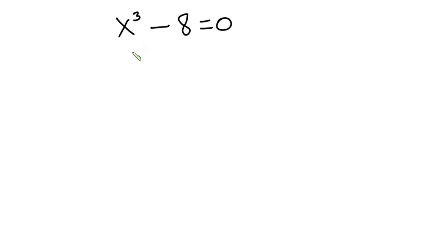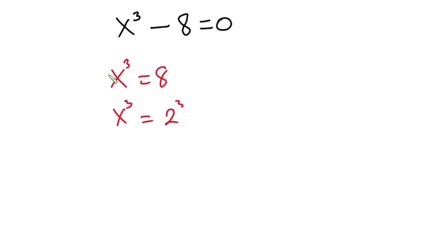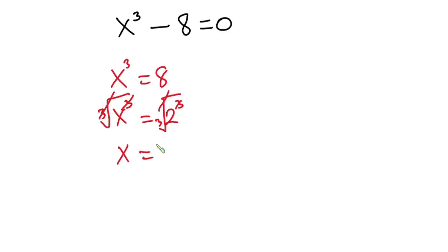Now let's get started. One way to solve this problem is to make x to the third power the subject. So we have 8 over here, which can also be written as x to the third power is equal to 2 to the third power. Taking the cube root on both sides, the cube roots cancel, and we get x is equal to 2.